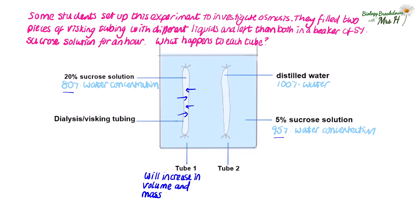Tube two contains a 100% water concentration sitting in a 95% water concentration. So water will move from a high water concentration inside the tube to a lower water concentration outside the tube through a partially permeable membrane. The tube will decrease in volume and mass. Notice that each time I answer the questions I repeat the whole definition, because the examiners like you to say all the key parts. The more you repeat it the more you remember it, and you want to get all the marks you can get.